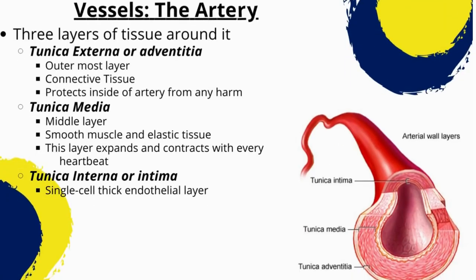The tunica media is the middle layer of the arterial wall and is composed of smooth muscle cells and elastic fibers. The smooth muscle cells in this layer are responsible for controlling the diameter of the blood vessel and regulating blood flow. The tunica adventitia, the outermost layer, is composed of connective tissue and collagen fibers, providing structural support and anchoring the vessel in place. Overall, the layers work together to maintain strength and stability, regulate blood flow, and prevent blood clot formation, while also playing roles in injury response and healing.